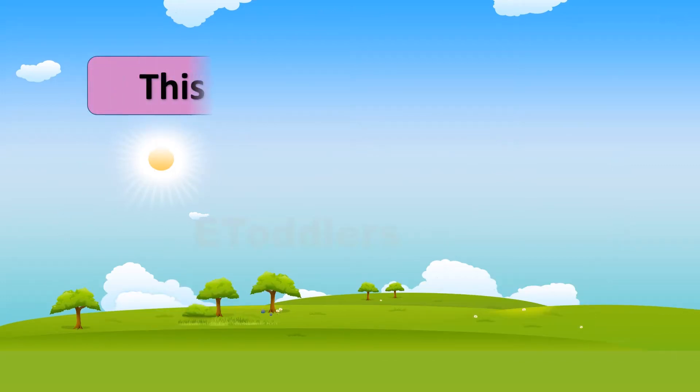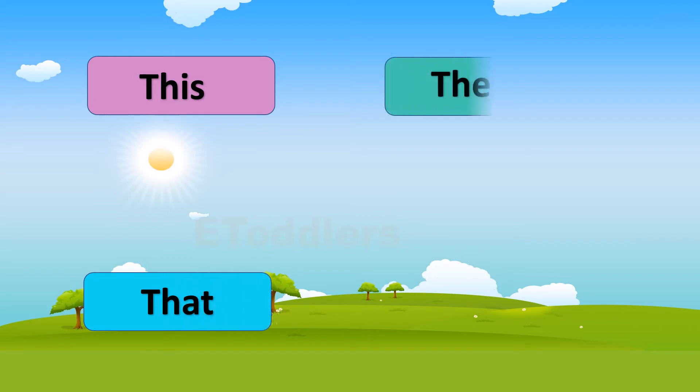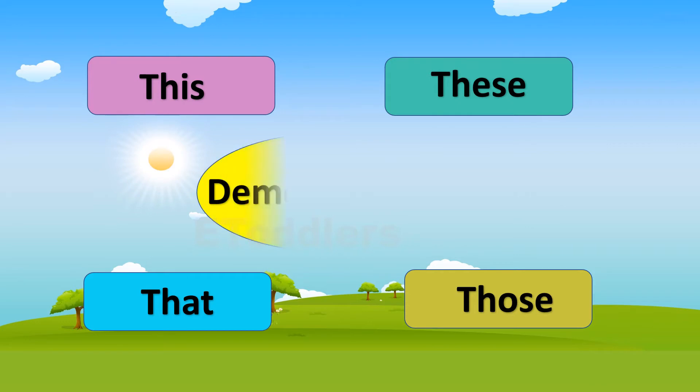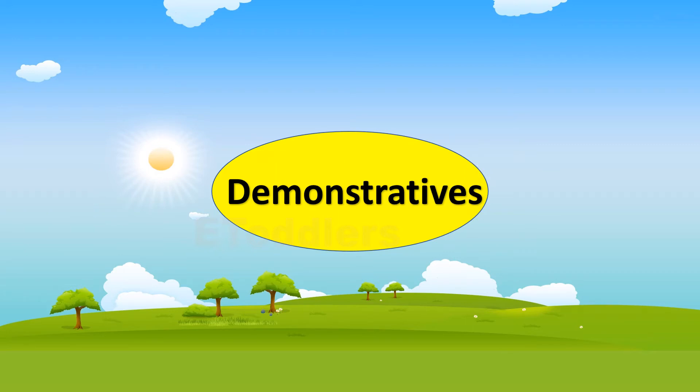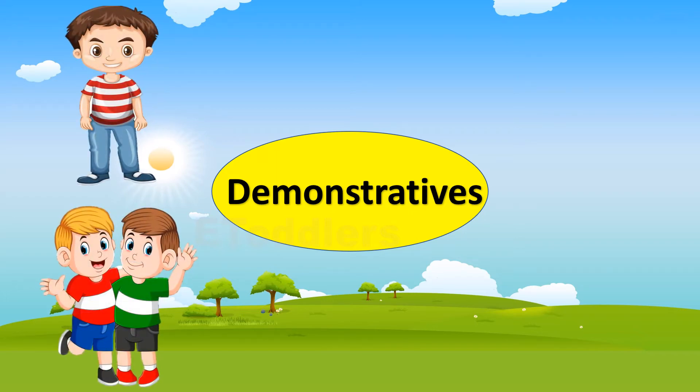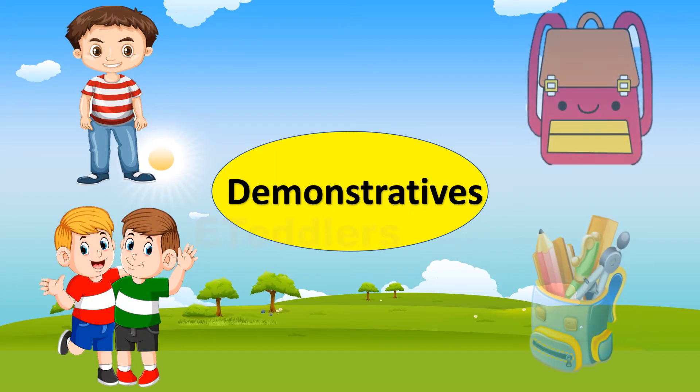This, that, these, and those. They are known as demonstratives. Demonstratives are words that are used to point to specific people or things being referred to.